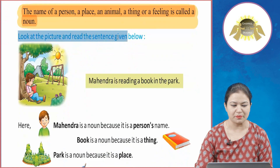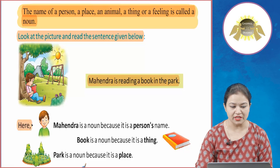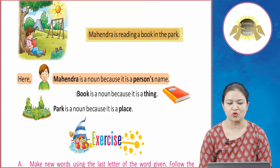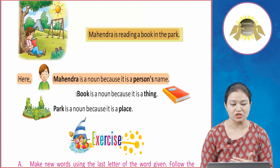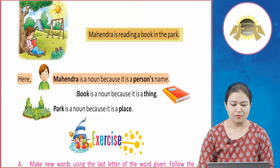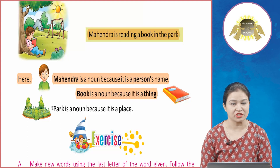Look at the picture and read the sentence given below. Mahindra is reading a book in the park. Here, Mahindra is a noun because it is a person's name. यहां पर Mahindra नाउन है क्योंकि वो एक person का नाम है। Book is a noun because it's a thing — book noun है क्योंकि वो एक चीज है।